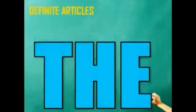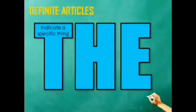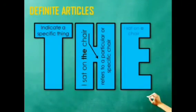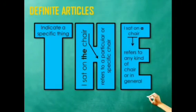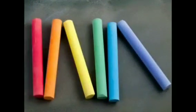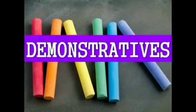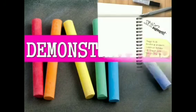Next, the definite article 'the' indicates a specific thing. 'I sat on the chair' — it refers to a particular or specific chair. 'I sat on a chair' means any kind of chair. We also learned about demonstratives: this, that, these, and those.